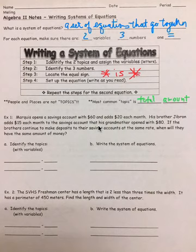So our topics here would be money, total amount, or total money, T, and months, M.